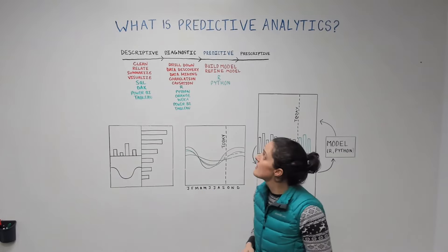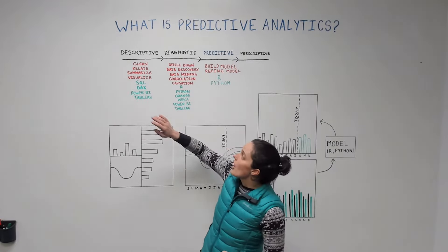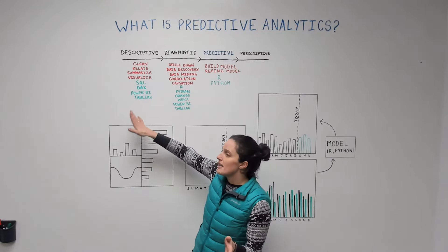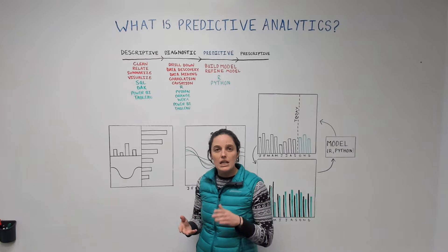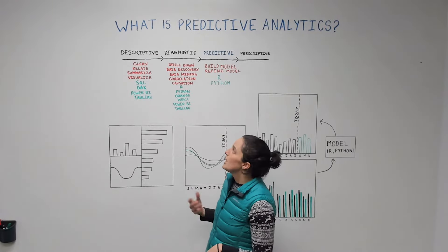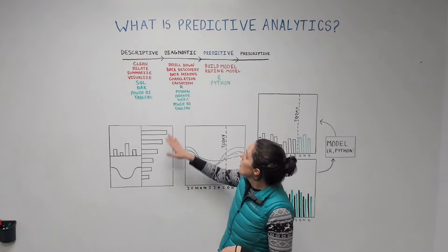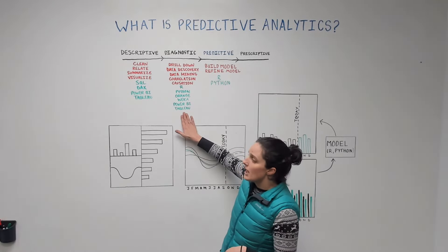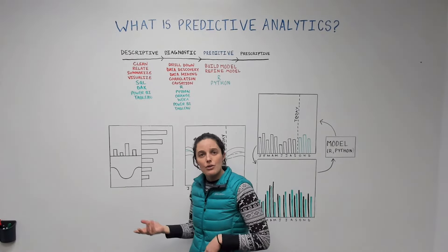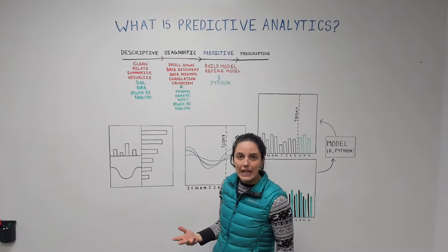Predictive analytics fits into the spectrum of analytics that we've talked about before. Starting with descriptive, which is the most basic — basically just cleaning, relating, summarizing, and visualizing your data, really getting to the questions about what's happening in my business. And then there's diagnostic, which is really getting down to why things are happening, what's causing my revenue to decline or to increase, how are things related.